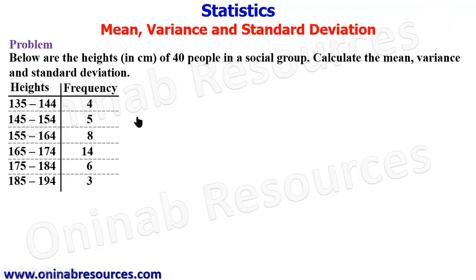So we have the data here. For the heights column, 135 to 144 centimeters: four people fall within this range. From 145 to 154: five people. 155 to 164: eight people.